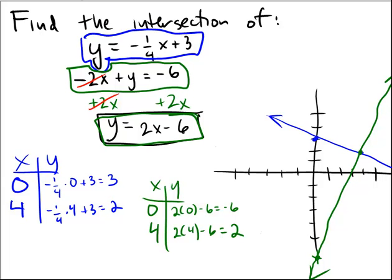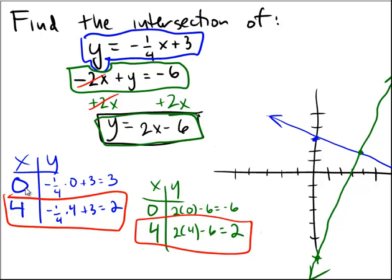So, in particular, I was really fortunate here that 4, 2 was a point on the second line, the green line. And it was also a point on the blue line. So, that point right there of 4, 2 is common to both of the lines that were drawn.